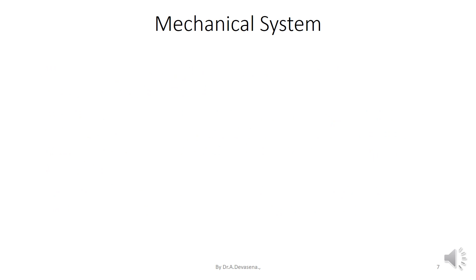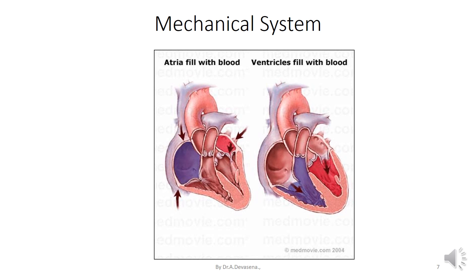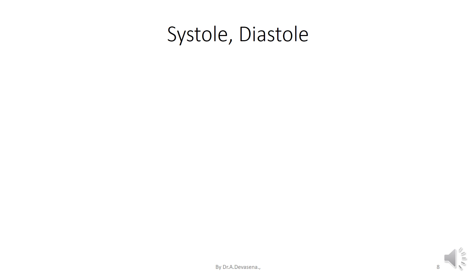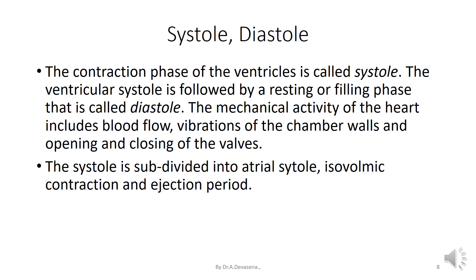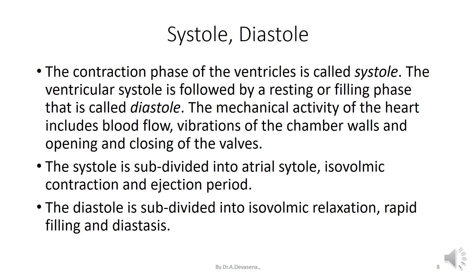This is the representation of the mechanical system. This picture indicates how the atria fills with the blood and how the ventricles fill with the blood. The contraction phase of the ventricles is called systole. The ventricular systole is followed by a resting or filling phase called diastole. The mechanical activity of the heart includes blood flow, vibrations of the chamber valves, and opening and closing of the valves. The systole is subdivided into atrial systole, isovolumic contraction, and ejection period. The diastole is subdivided into isovolumic relaxation, rapid filling, and diastasis.